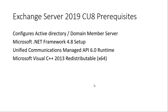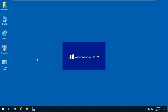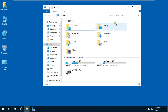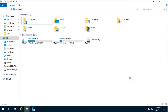Install Microsoft .NET Framework 4.8, which is easily available on the internet. Install Unified Communications Managed API 6.0 Runtime. Install Microsoft Visual C++ 2013 Redistributable x64. These are the prerequisites before we install Exchange Server 2019.